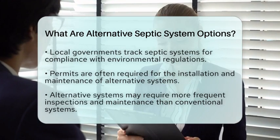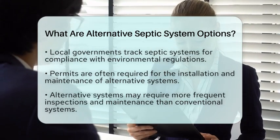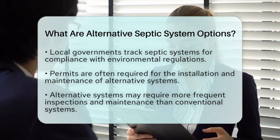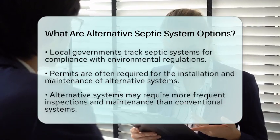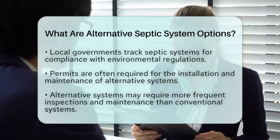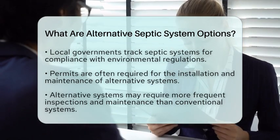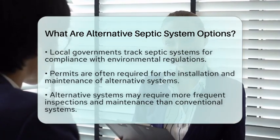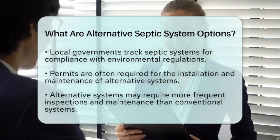Alternative systems may need more frequent inspections and maintenance than conventional ones. This could include annual permits and regular monitoring by approved service providers to ensure everything runs smoothly. In summary, alternative septic systems offer flexible solutions for wastewater treatment in challenging environments. They play an important role in maintaining environmental health and ensuring compliance with local regulations.